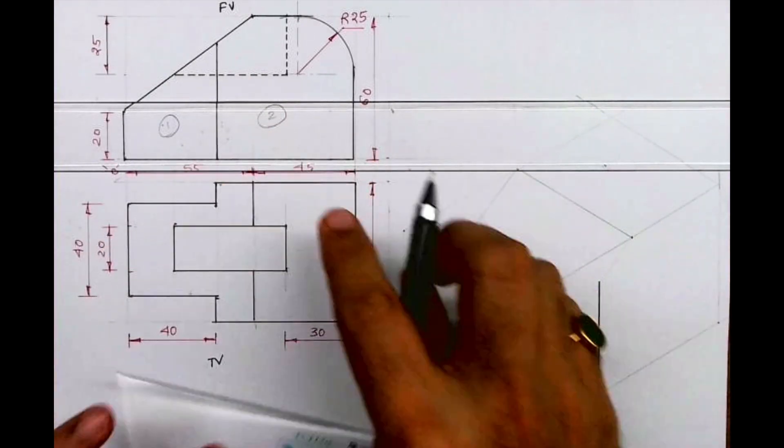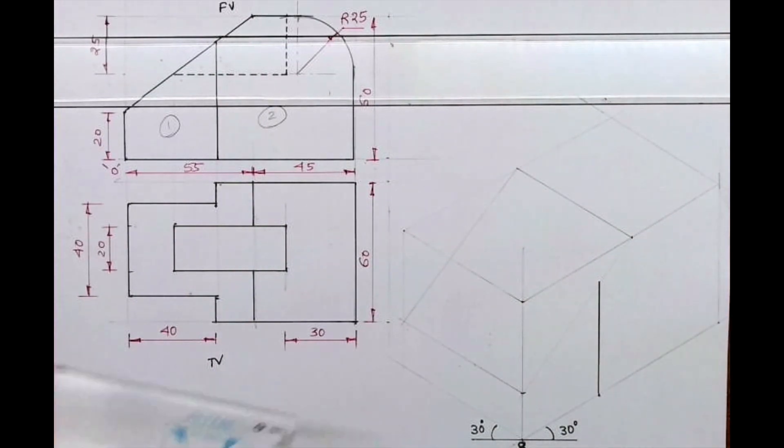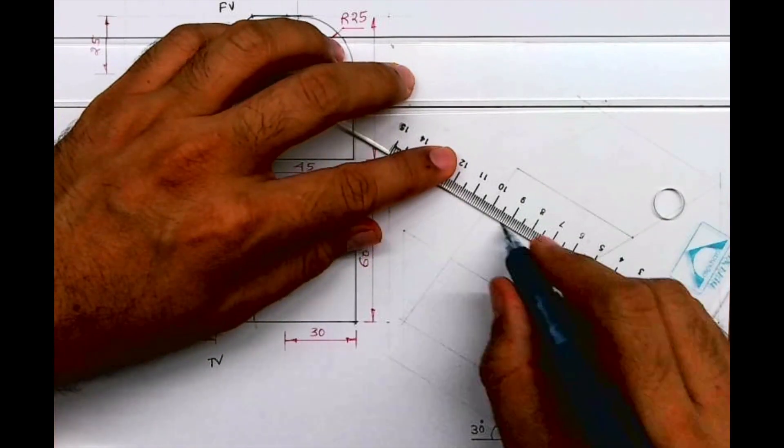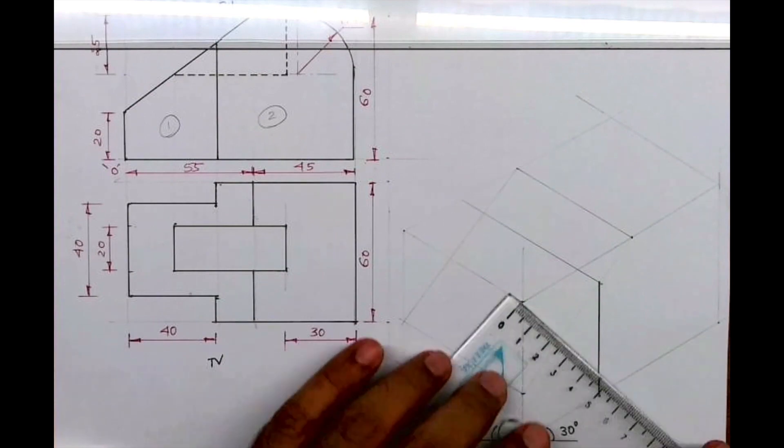So this is a dark line. Now what we'll do is try and focus on part one. So part one is how much inside? 10. So from here I can draw an inside line like this and I can mark 10, 40, 10.